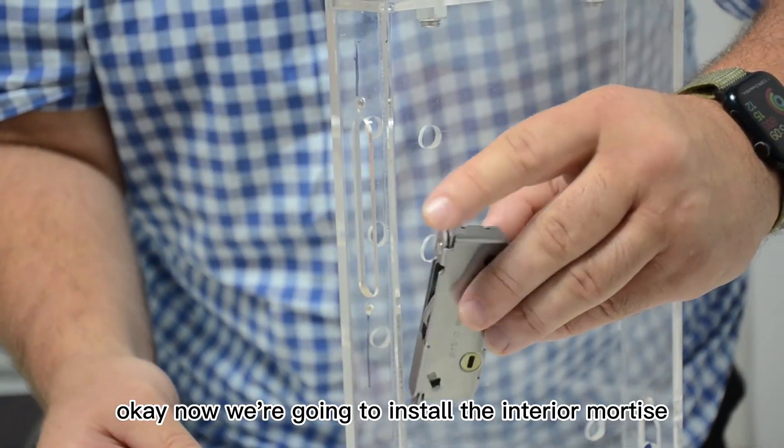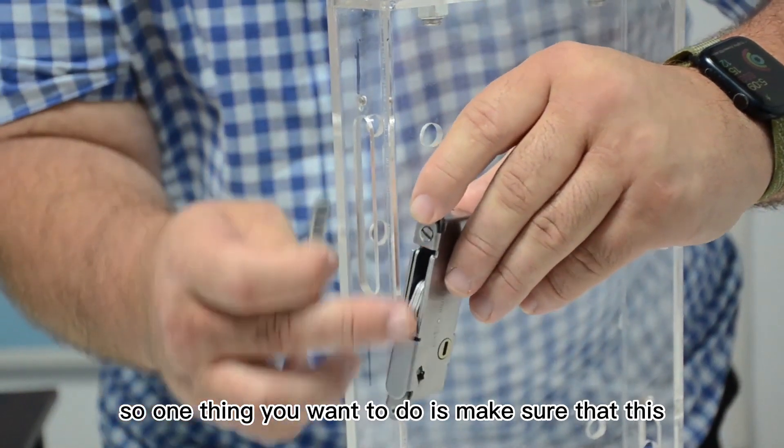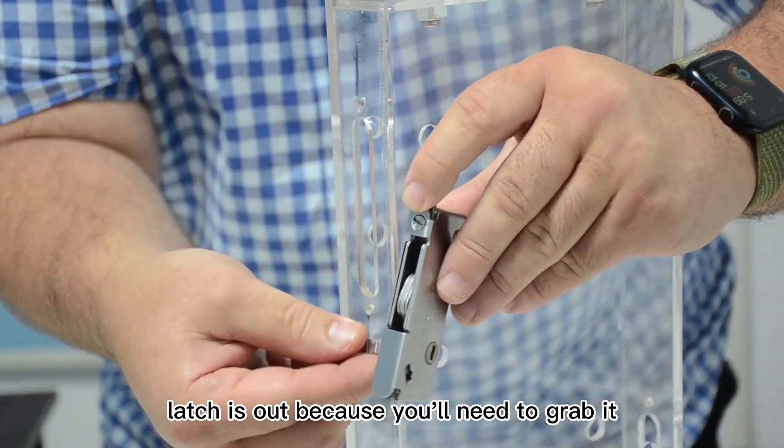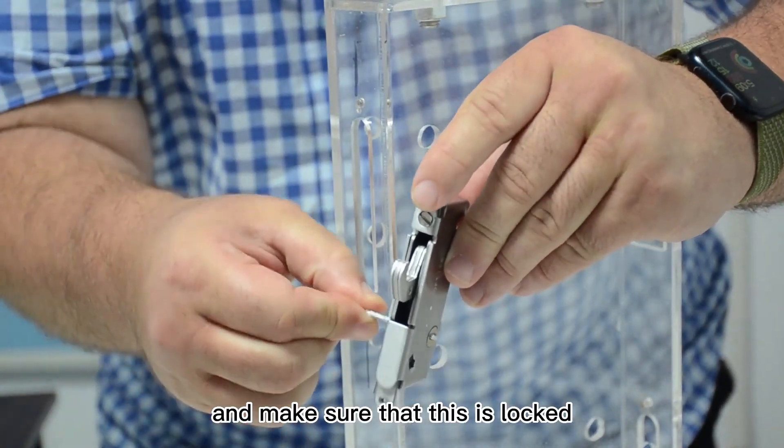Now we're going to install the interior mortise. One thing you want to do is make sure that this latch is out because you'll need to grab it. Go ahead and twist it all the way and make sure that this is locked.